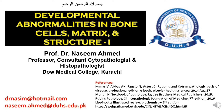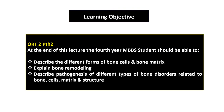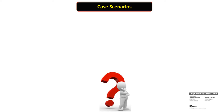The email address is mentioned so if you have any query you can email me. These are the learning objectives for today's lecture. At the end of this lecture the fourth year MBBS student should be able to describe the different forms of bone cells and bone matrix, explain bone remodeling, and describe the pathogenesis of different types of bone disorders related to bone cell, matrix, and structure. Before starting the lecture I would like to show you some clinical scenarios.